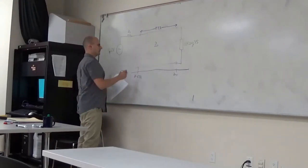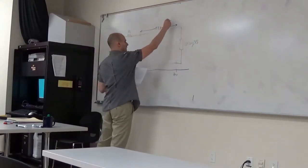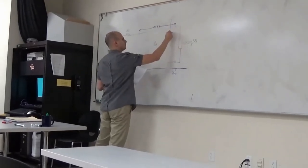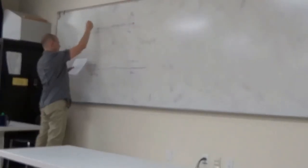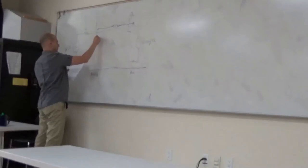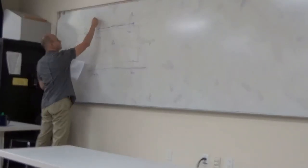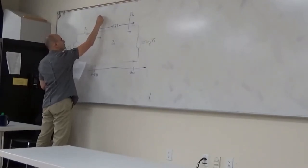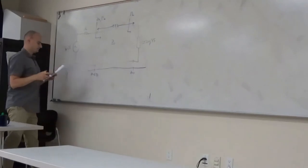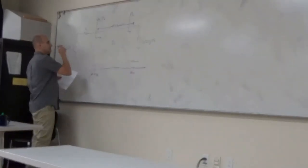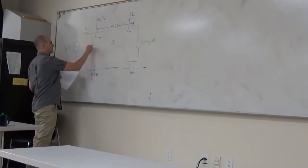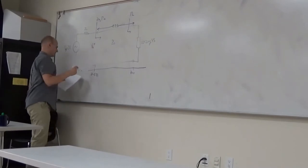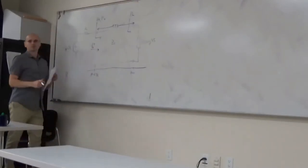Looking in here, we see ZL and we see gamma L. And then looking in here, after the transmission line section, we have an impedance of Z-in, or the reflection coefficient gamma-in. We also have some incident voltage equal to V naught plus, which is going at the circuit.